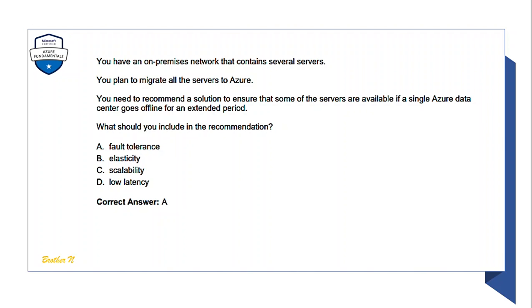Question: You have an on-premises network that contains several servers. You plan to migrate all the servers to Azure. You need to recommend a solution to ensure that some servers are available if a single Azure data center goes offline for an extended period. The answer is fault tolerance.